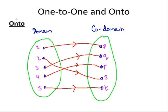Here's an onto function. We can see that each element of the co-domain has an ancestor: p's ancestor is one, q's ancestor is three, r's ancestor is four, s's ancestor is two, and t's ancestor is five. So each element of the co-domain has an ancestor.